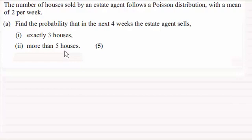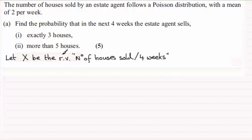First of all, what we need to do is define a random variable. Let X be the random variable number of houses sold per four weeks, and this is going to follow a Poisson distribution. We've got to take care here because the period has changed. We're now up to four weeks and the estate agent sells two per week, so over a period of four weeks that's going to be four times two, expected eight houses sold. So we have a mean of eight.